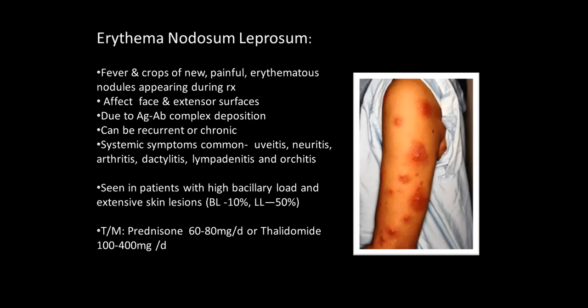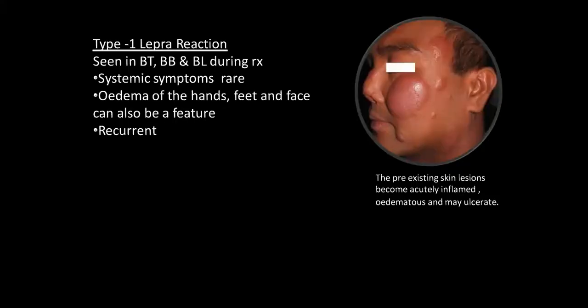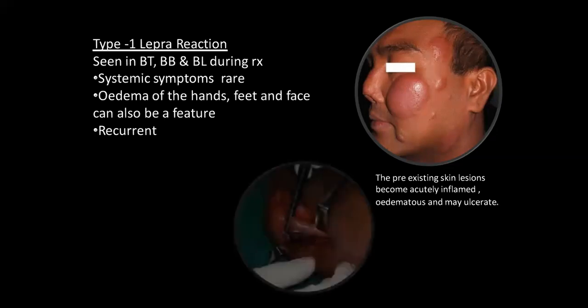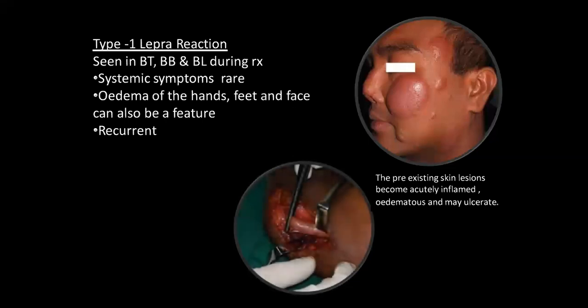High-dose prednisolone and thalidomide must be given. Type 1 lepra reaction is seen in borderline tuberculoid, borderline, and borderline lepromatous during treatment. The pre-existing lesions become fiery. Systemic symptoms are rare. Oedema of hands and feet may occur and it is recurrent. No new lesions are present, but the patient is systemically better.